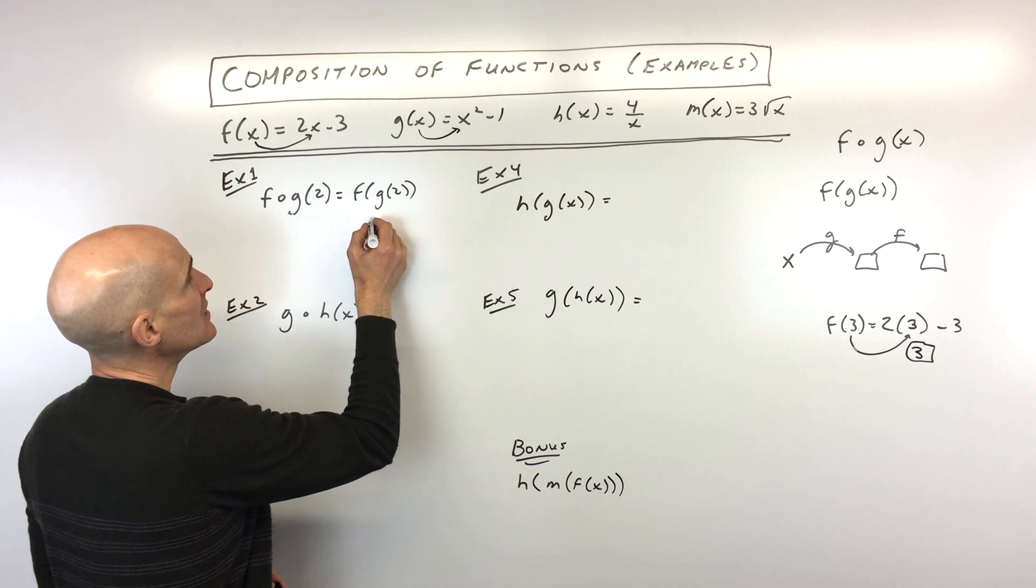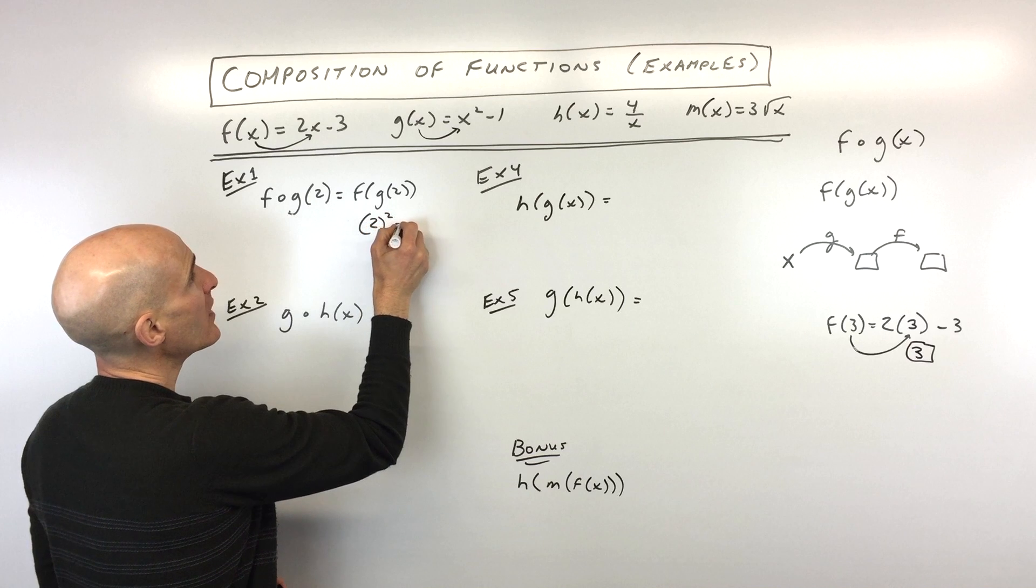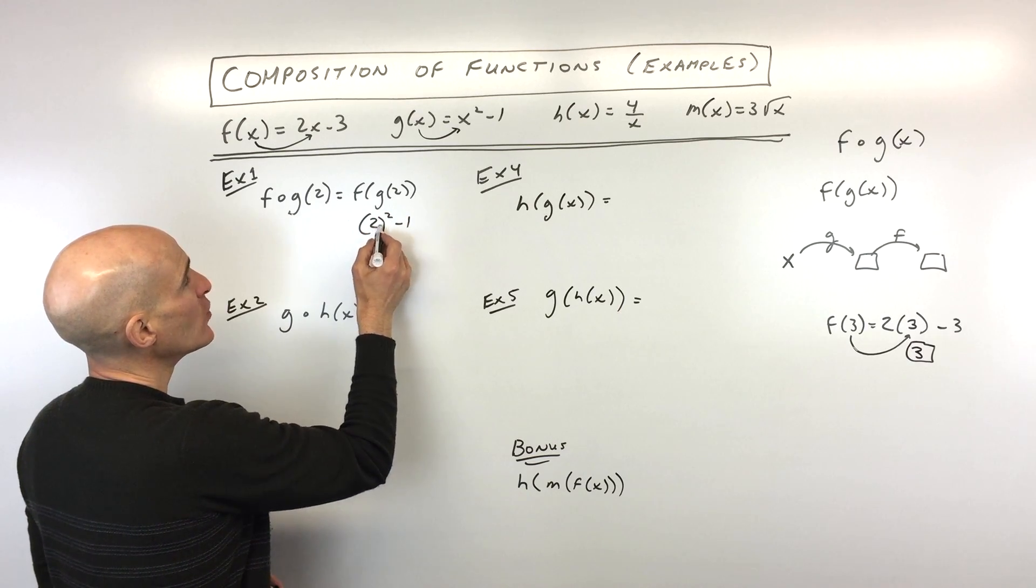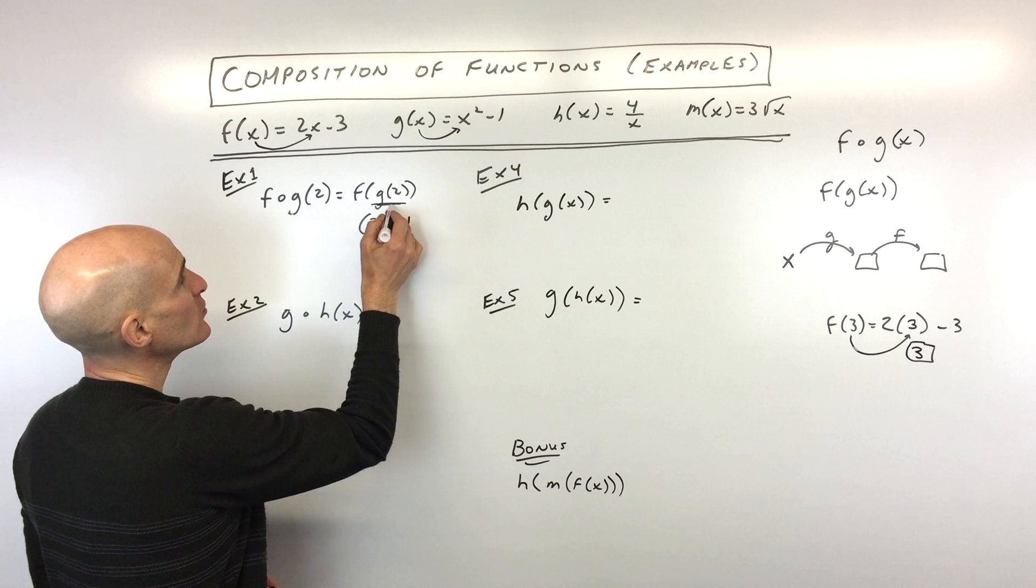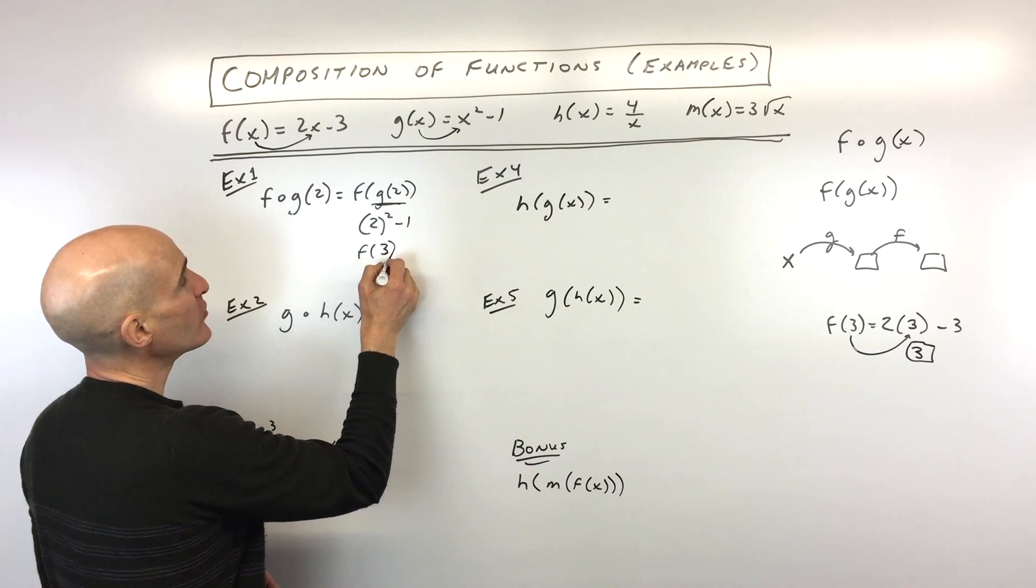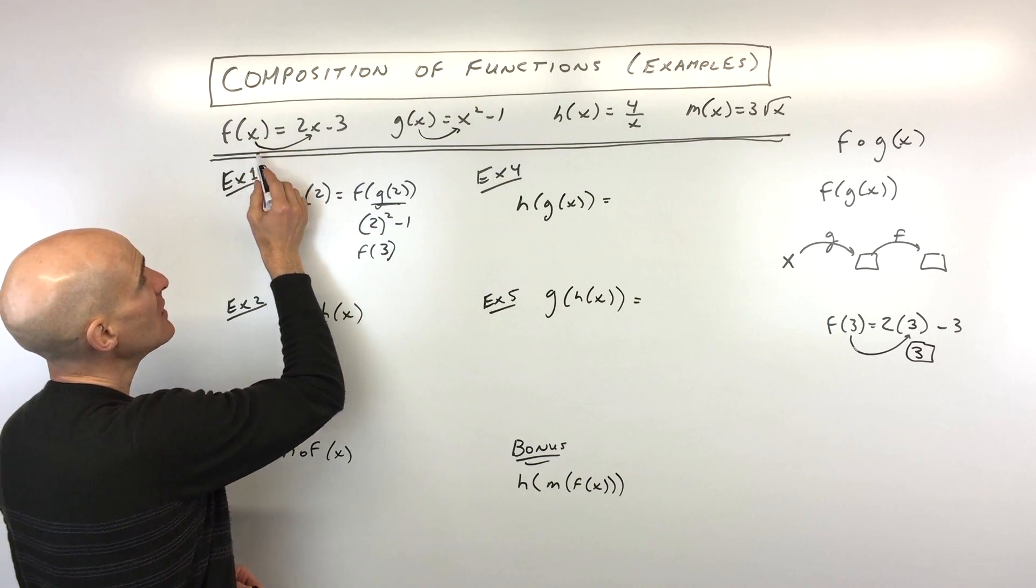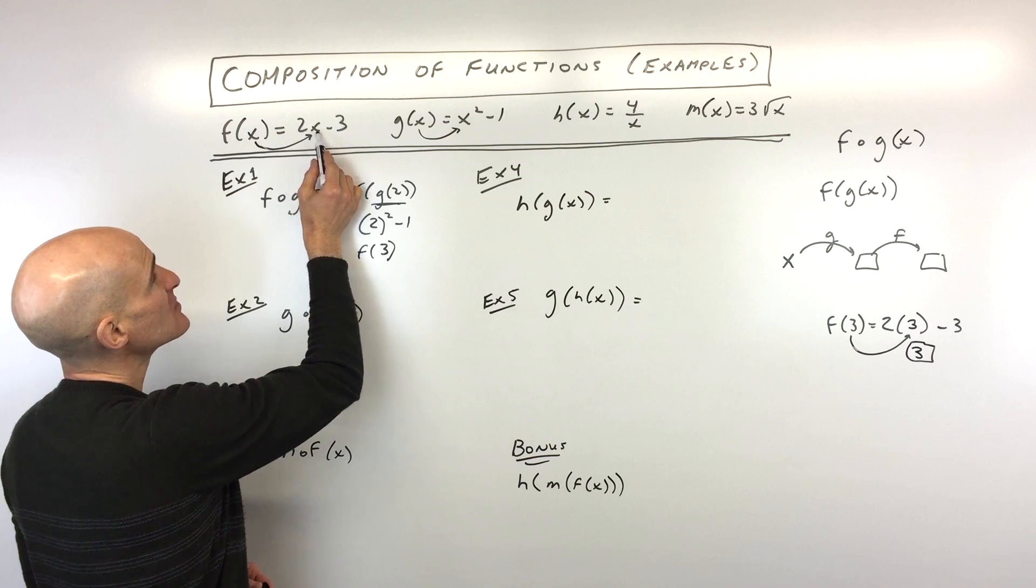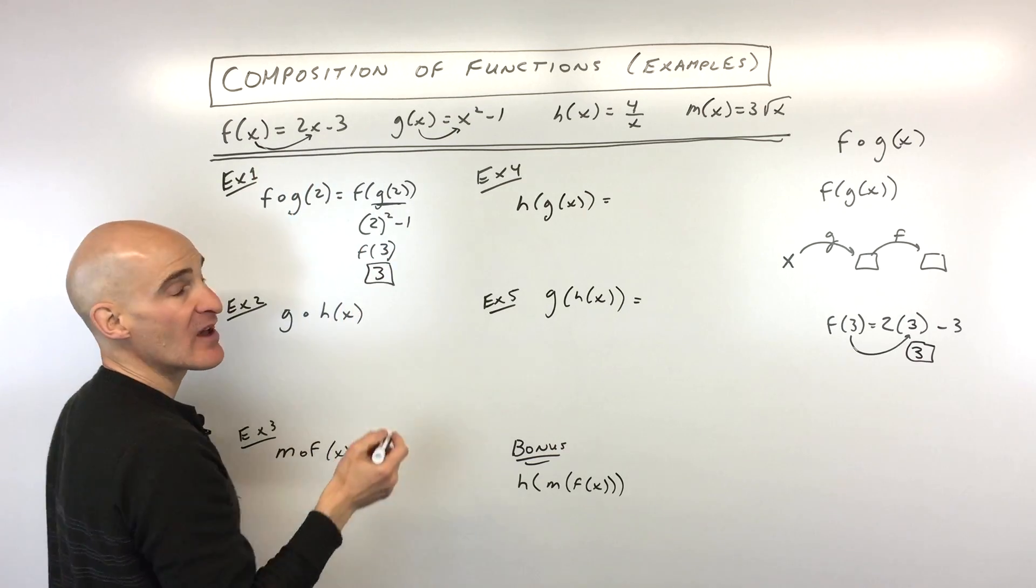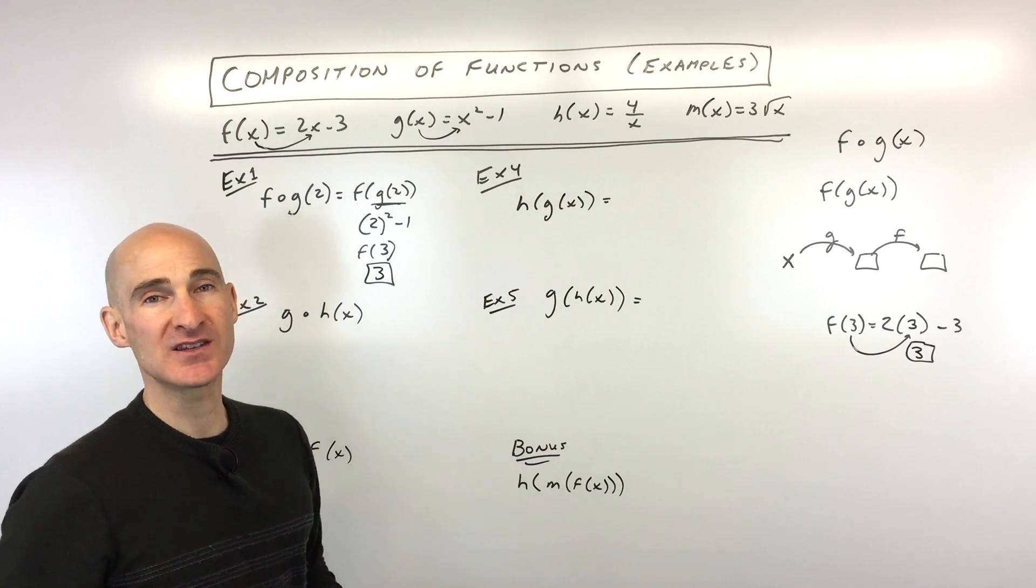So this is actually going to be 2 squared minus 1, which is 4 minus 1 is 3. So now this is equal to 3, so that's going to be f of 3. We go to our f function, we put in 3, 2 times 3 is 6, minus 3 equals 3, and we've got it. So it's just a multi-step process.